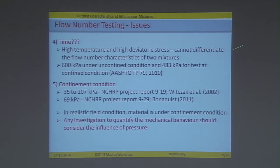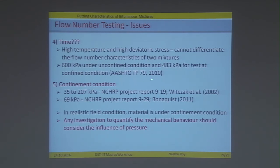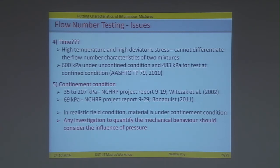As per the protocol, the test is done at 600 kPa under unconfined conditions and 483 kPa under confined conditions as per AASHTO TP 79. Another issue is confinement: all tests done here are under unconfined conditions since the protocol does not mandate confined testing, but optionally specifies 35 to 207 kPa as per NCHRP 919, later improved to 69 kPa as per NCHRP 929. However, in realistic conditions any material is under confined condition, so any investigation to quantify mechanical behaviour should consider the influence of confinement. Additionally, post-processing of data is an issue — multiple numerical differentiation procedures cannot arrive at one particular flow time or flow number value due to inevitable noise in the data.